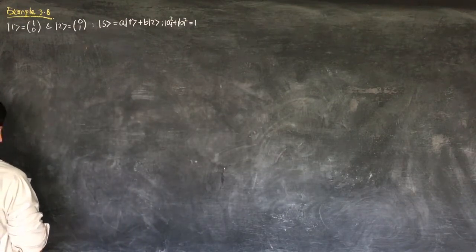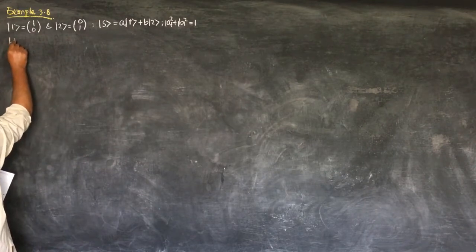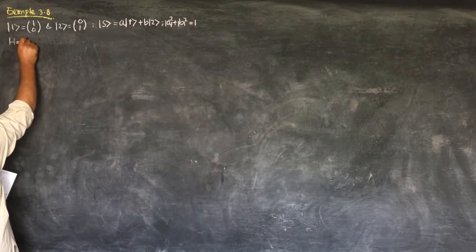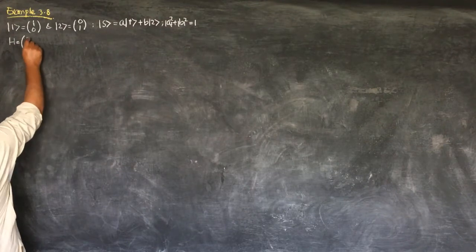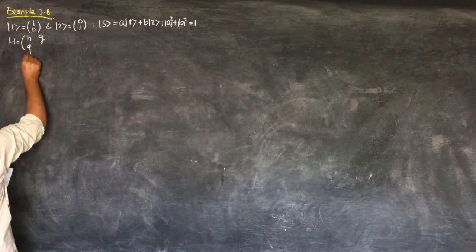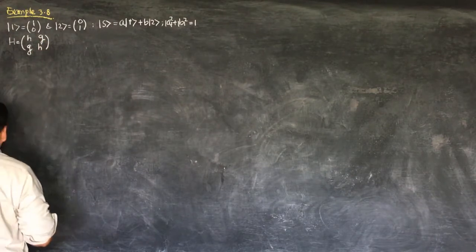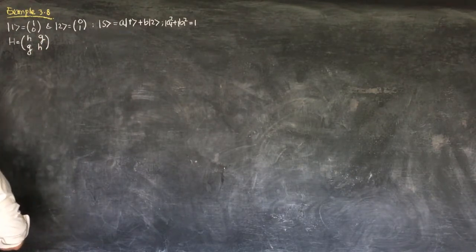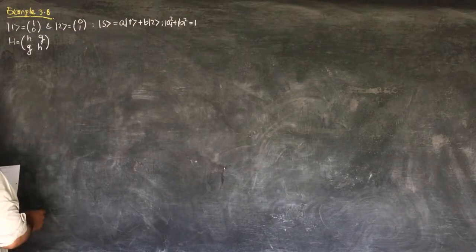The Hamiltonian can be expressed as a 2×2 matrix: H = [[h, g], [g, h]], where h and g are real constants. The question is: if the system starts out at t = 0 in state |1⟩, what will be the state at any later time t?